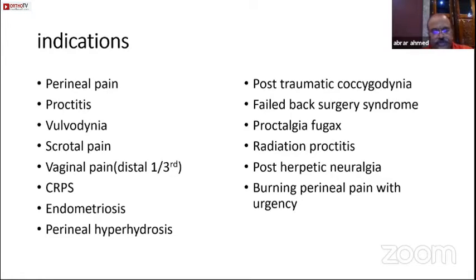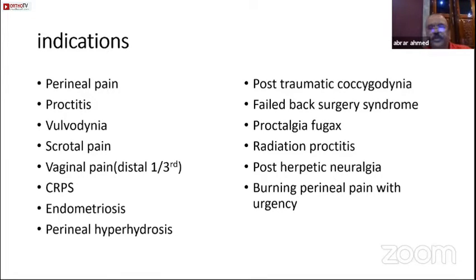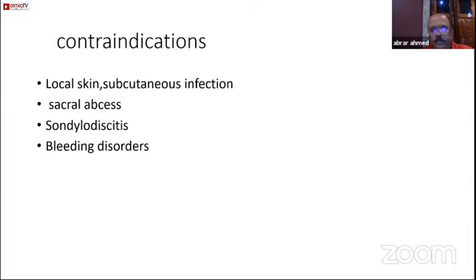Most commonly, what we use it for is post-traumatic coccydynia or tailbone syndrome. It can also be used in proctalgia fugax — that is the involuntary spasm of the adductor muscles — radiation proctitis, post-herpetic neuralgia, etc. Contraindications: there are no absolute contraindications. Basically, it is local skin or subcutaneous infection, sacral abscess, spondylodiscitis, or bleeding disorders.